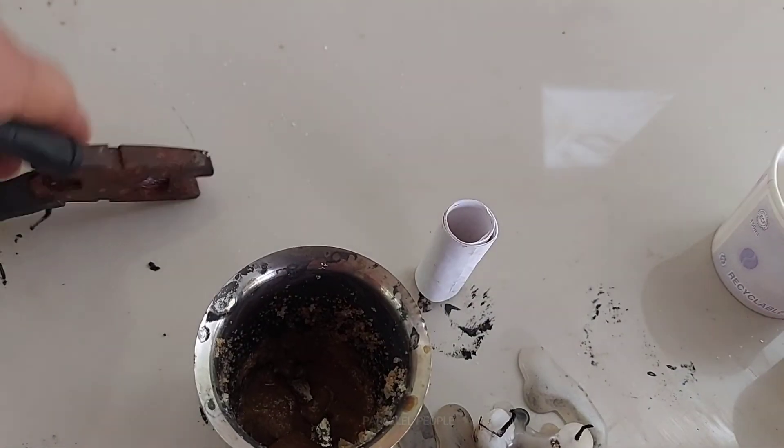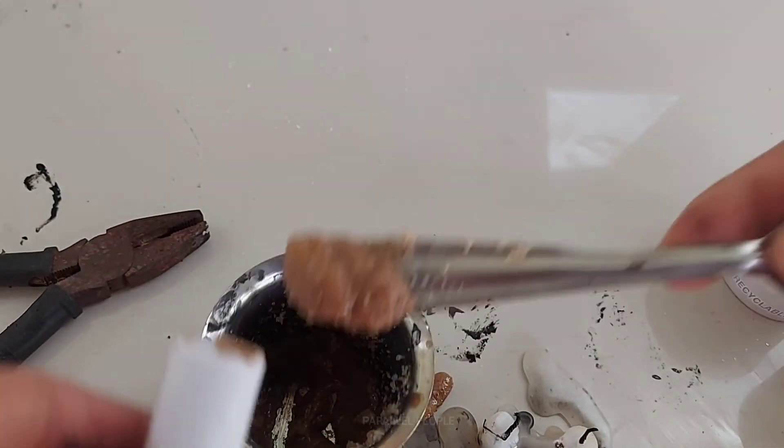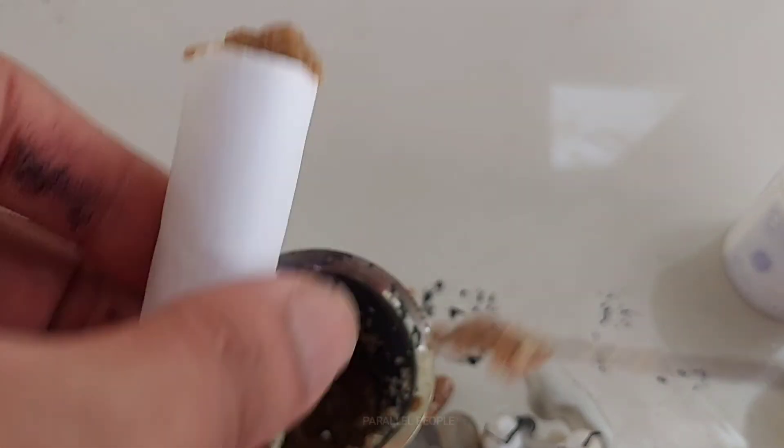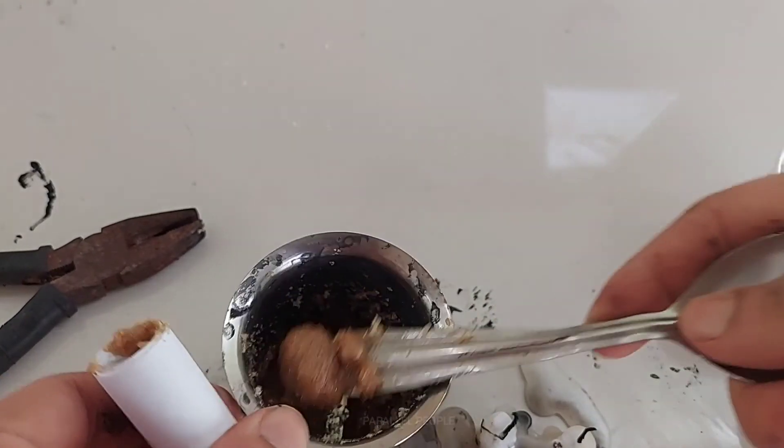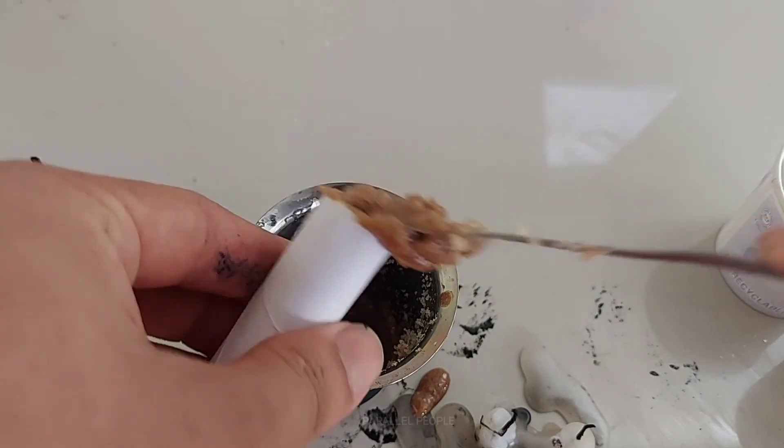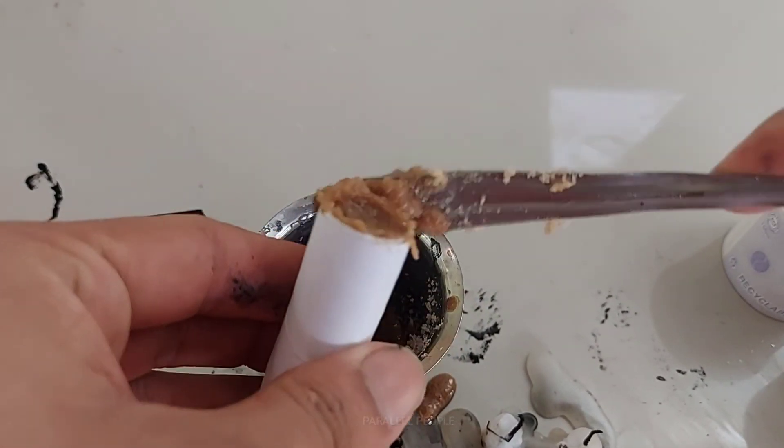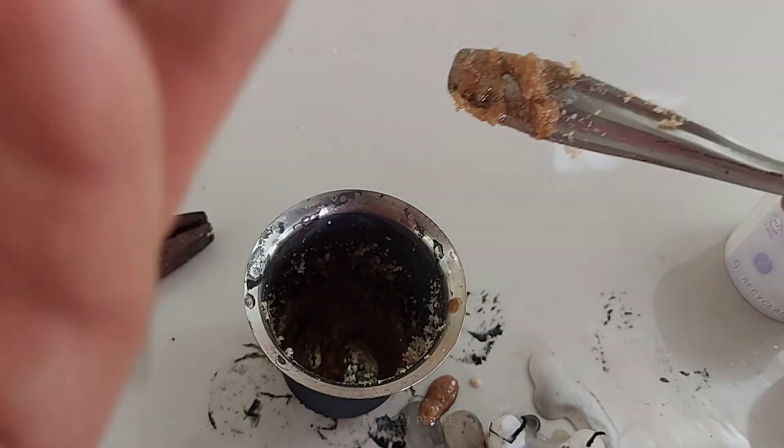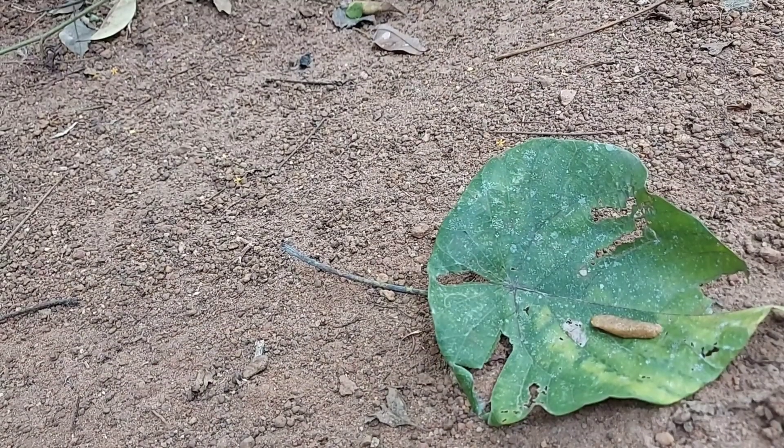After getting this paste-like consistency, your fuel-oxidizer mixture is ready. You can put this mixture inside the tube. Don't worry about its loose texture because it will solidify quickly, but make sure before it solidifies you pinch a hole through it in the center.